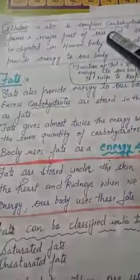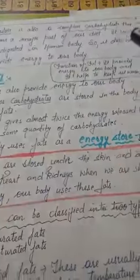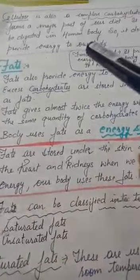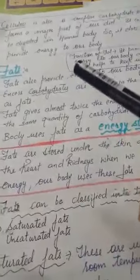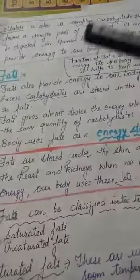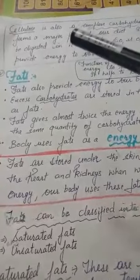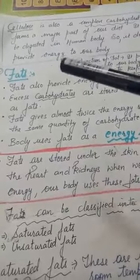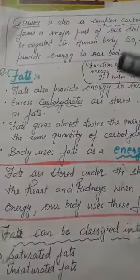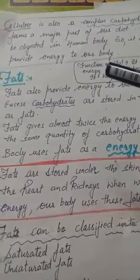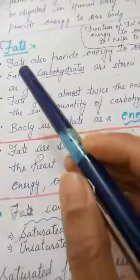Cellulose is also a complex carbohydrate and forms a major portion of fibrous food. However, it cannot be digested in the human body and so does not provide energy to us. Grass-eating animals like cows and buffaloes can digest cellulose because their digestive system contains a rumen. In humans, cellulose remains undigested and passes out of the body as waste.